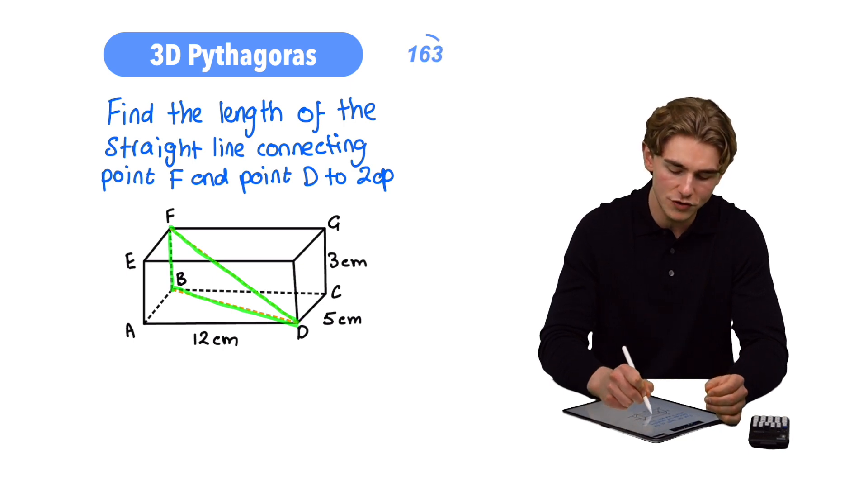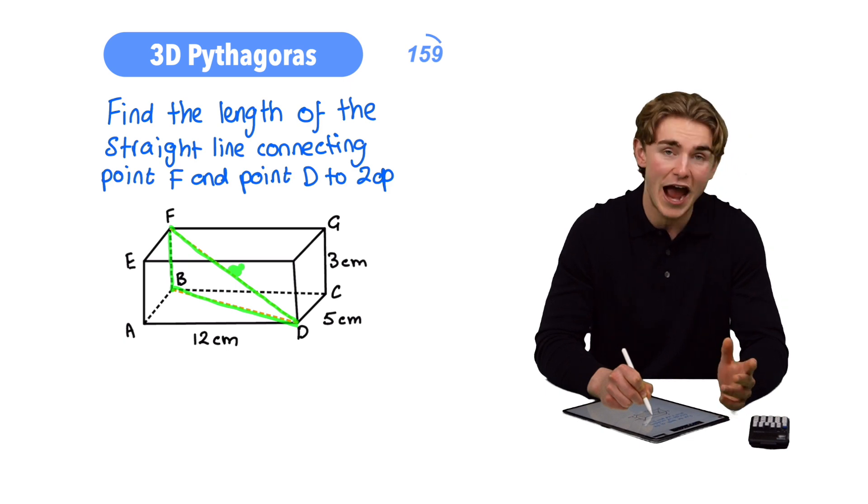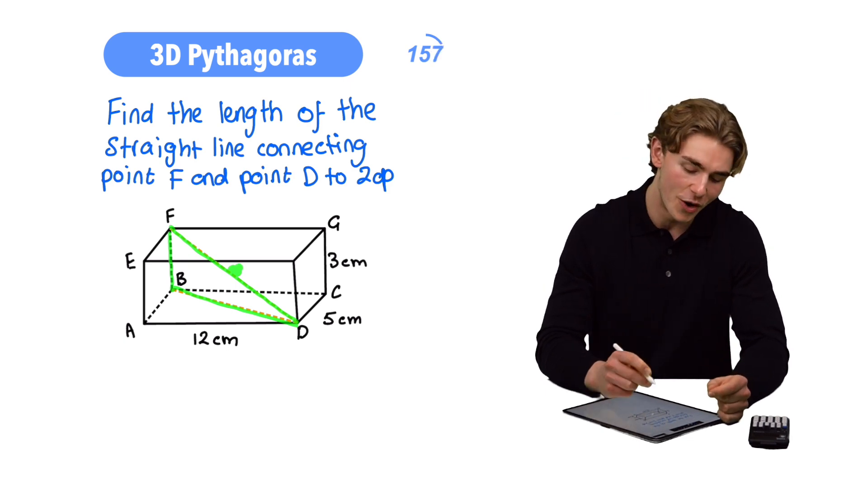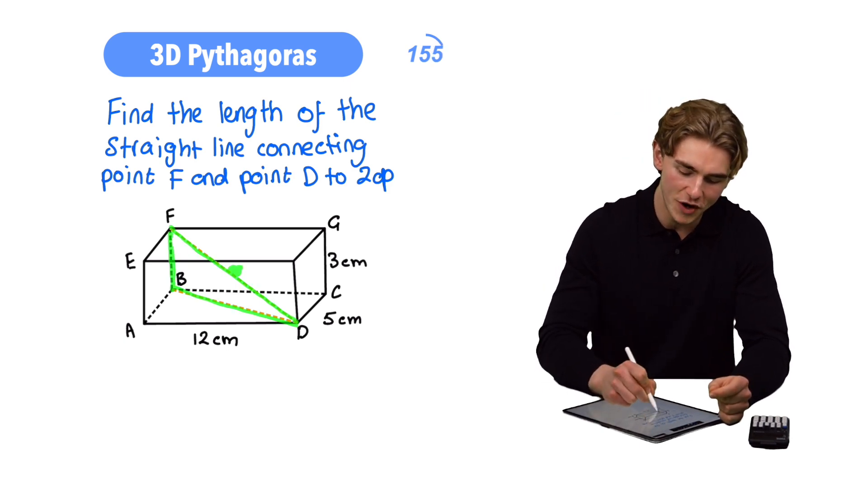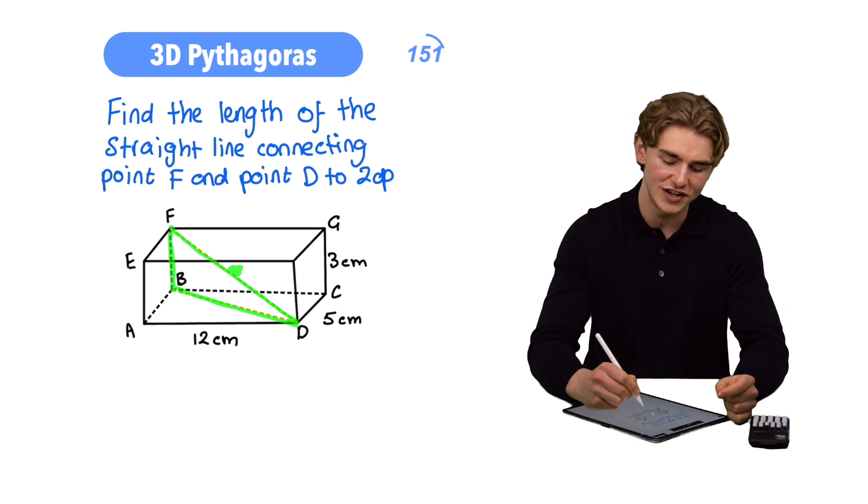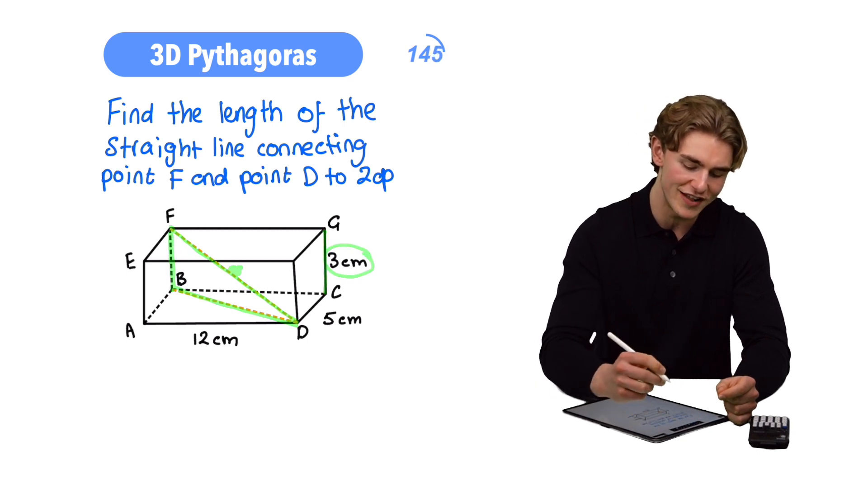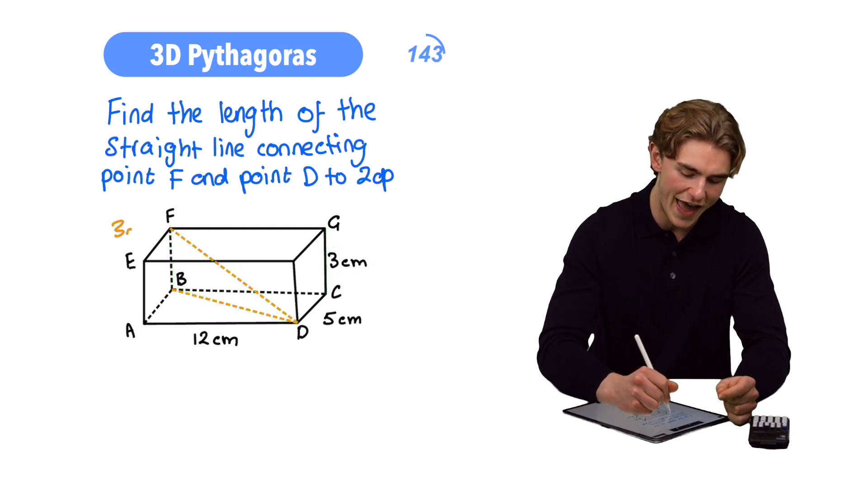If we can find the hypotenuse of our triangle, then we found the length of FD. How are we going to find the hypotenuse, though? We're going to need FB first of all, and we're going to need BD, so let's work those out. First of all, FB. We know that GC, the height of our triangle, is 3 centimeters, and FB is going to be the same as that, so we can write in 3 centimeters for FB.